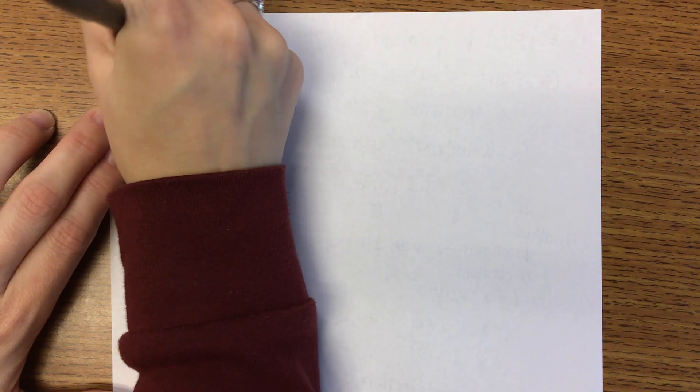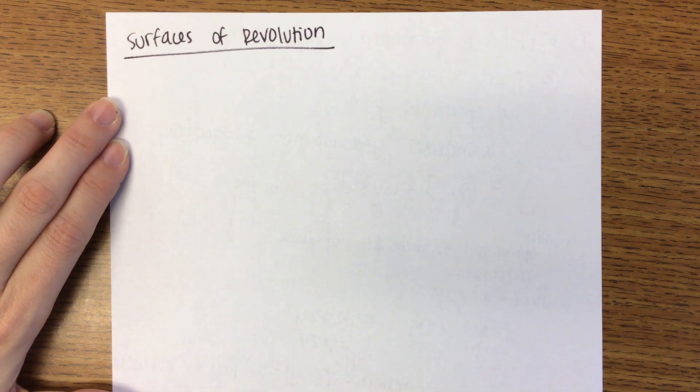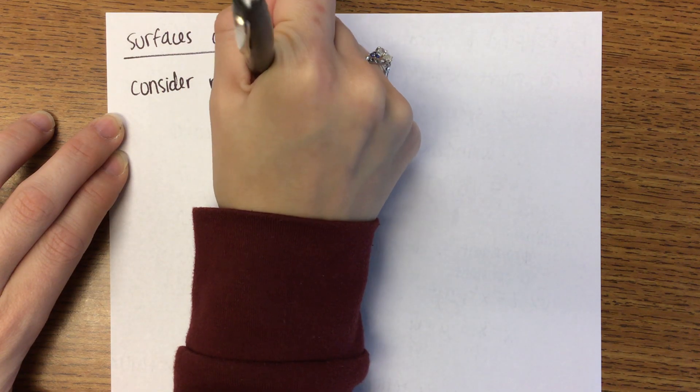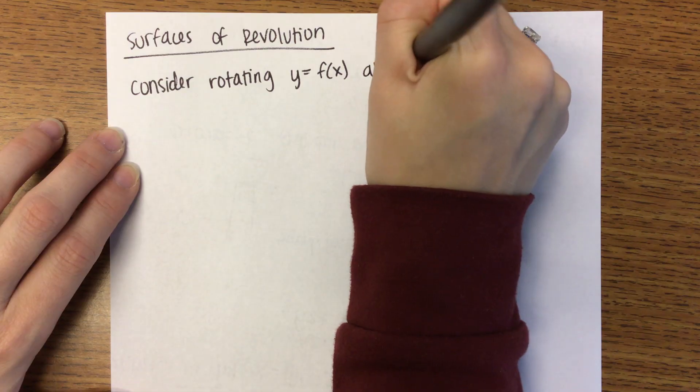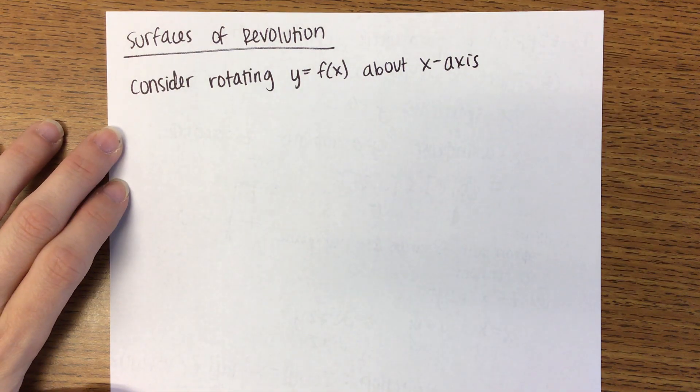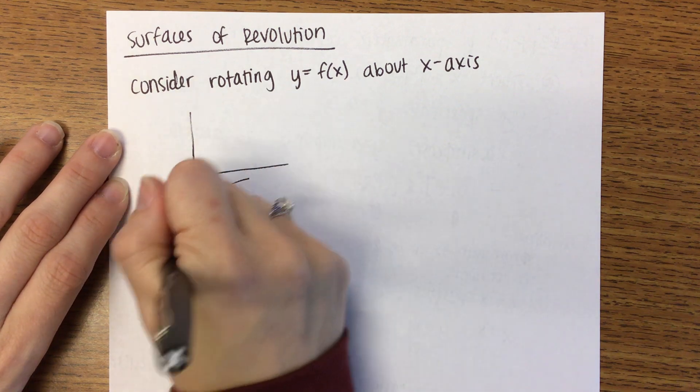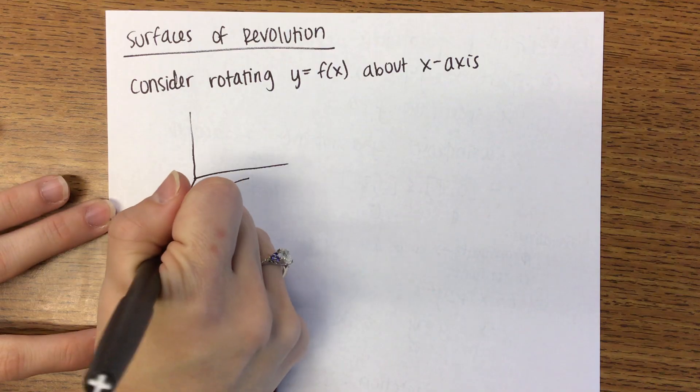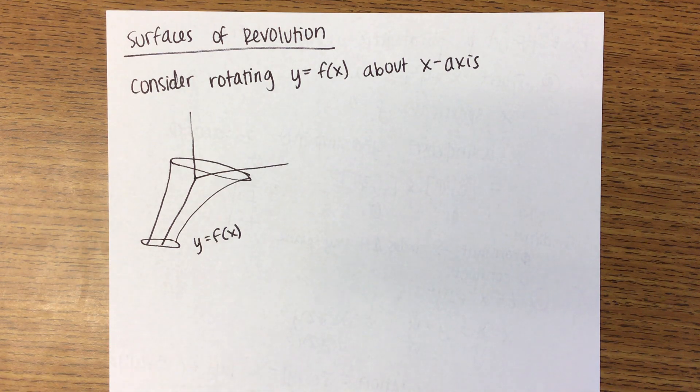Next thing I want to talk about is surfaces of revolution. Let's consider rotating the curve Y equals F of X about the X-axis. So let's say that our Y equals F of X is something like this. And then we revolve that about the X-axis. When we do, we'll get something like this. Can you picture that? Kind of like a blowhorn-ish.